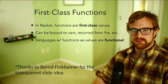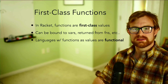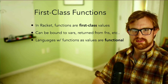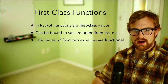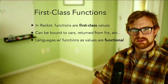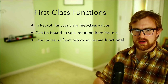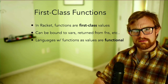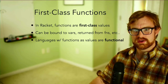We call Racket a functional programming language because in Racket, functions are first-class values. This means Racket has some native understanding of what a function is — you can bind functions to variables, return functions as the result of other functions, and accept functions as arguments. Languages that support functions being first-class values we call functional languages. A surprising number of today's languages are functional — for example, JavaScript, Ruby, and Python all support functions as first-class values.